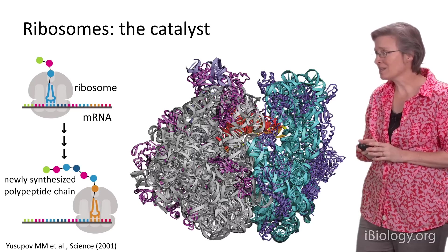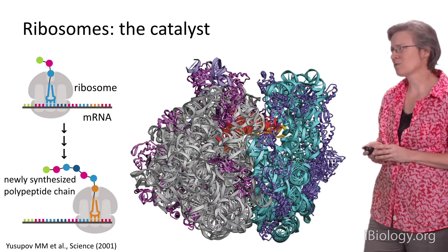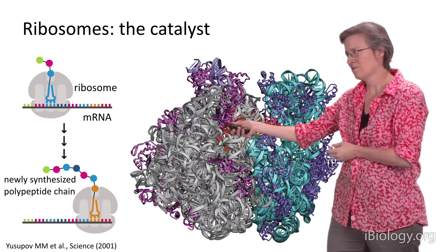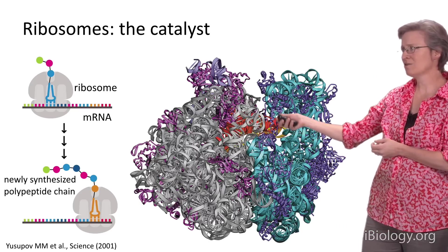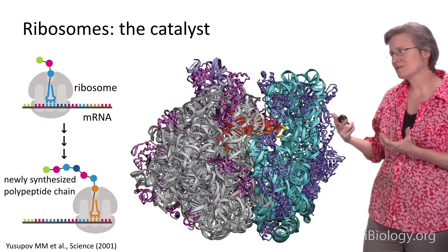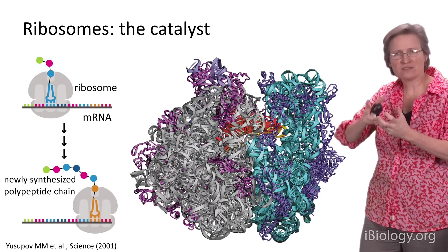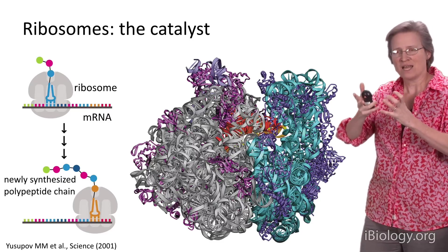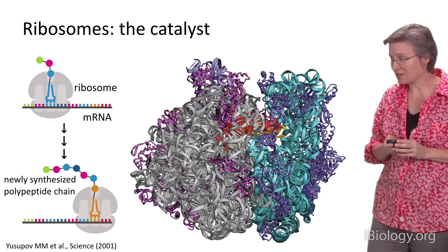Looking at a crystal structure of the ribosome from the side, the tRNAs are bridging across the interface region — from the peptidyl transferase center where amino acids are ligated together, to the decoding center where the genetic information is interpreted. This makes clear the extent to which translation must be an incredibly coordinated event, where tRNAs and messenger RNAs are being threaded through this tight interface with much movement and rearrangement needed to facilitate these events.